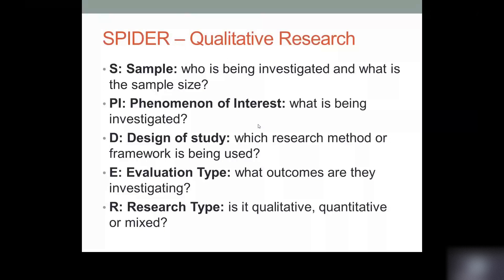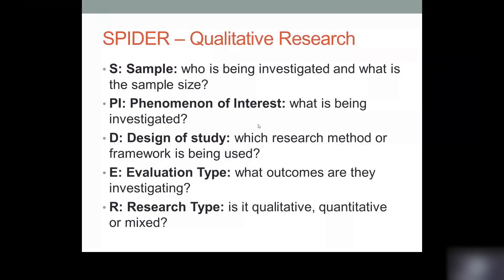For qualitative research you may prefer to use SPIDER. S is for sample, which is who is being investigated and what is the sample size. PI stands for phenomenon of interest, which is what is being investigated. D is the design of the study, so which research method or framework is being used. E is for the evaluation type, so what outcomes are we investigating. And R is for research type — so is it qualitative, quantitative or mixed.